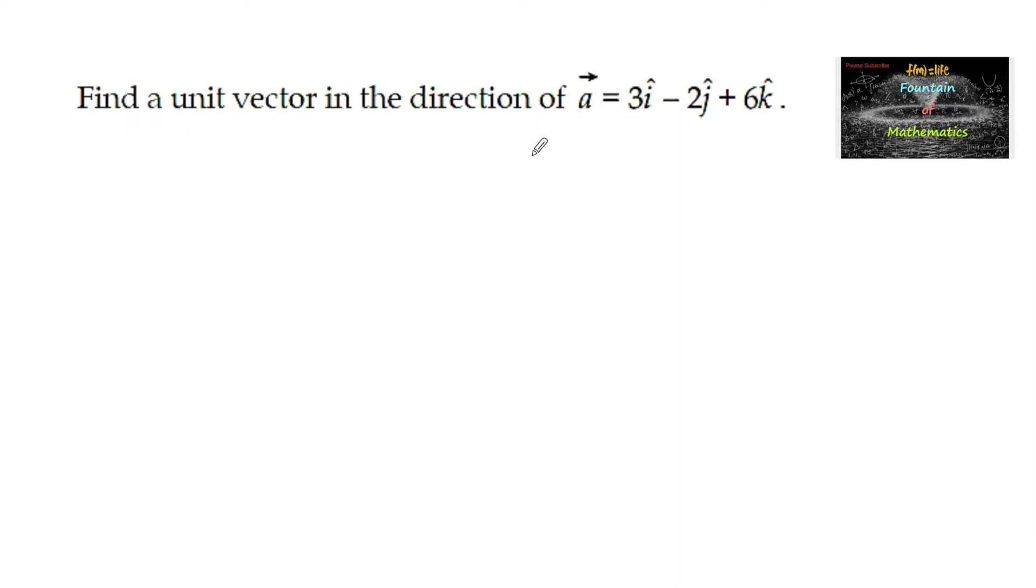Find a unit vector in the direction of vector a is equal to 3i cap minus 2j cap plus 6k cap.